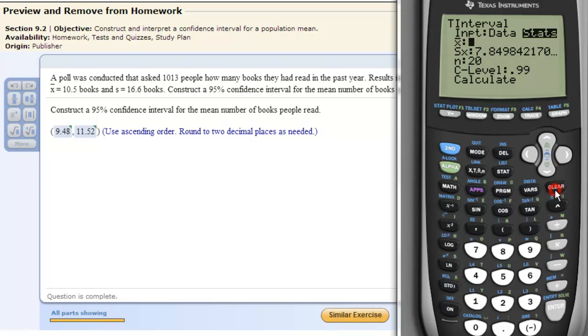This input will change now. I'm going to clear that out for the mean and type 10.5. Hit ENTER. I'm going to clear this out. Click 16.6. How many people were asked? 1,013. So that's our N, our number.